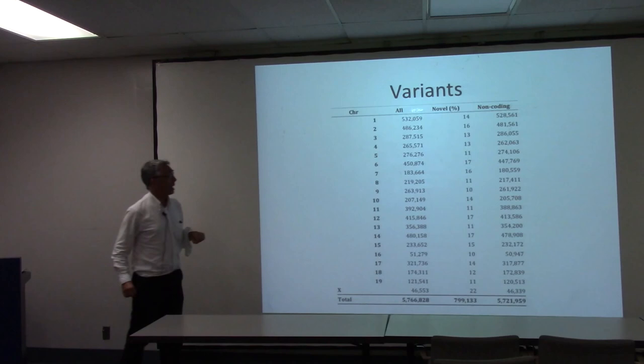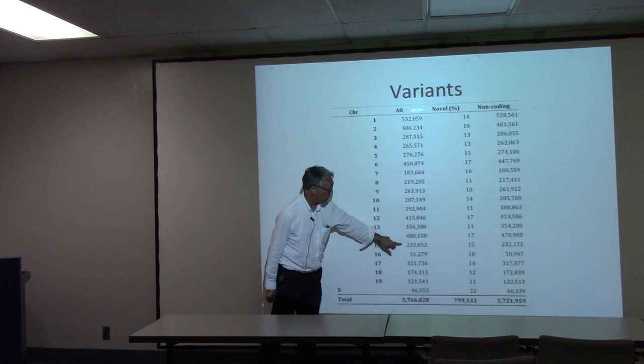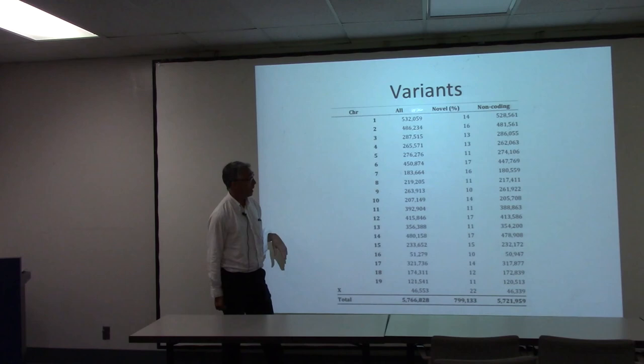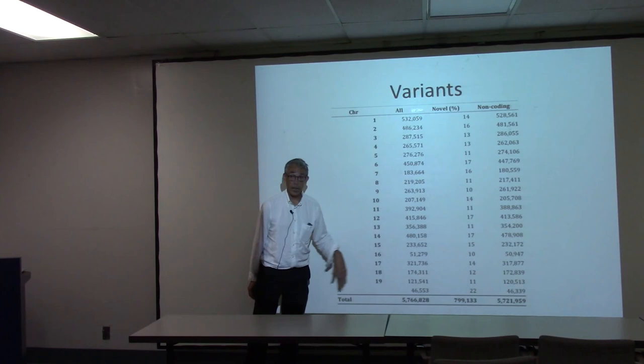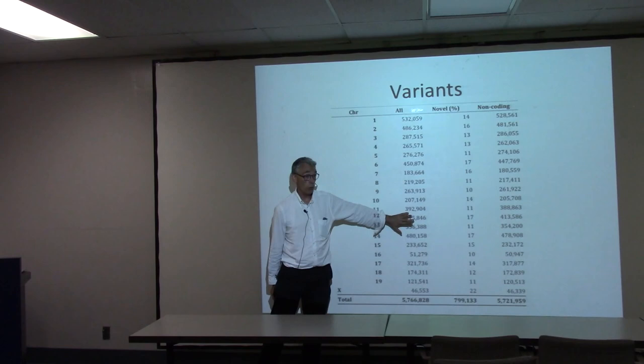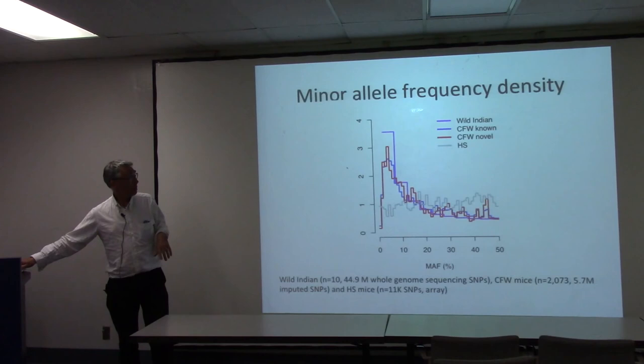Looking at total number of variants: chromosome 16 had only 51,000 variants, compared to most chromosomes of equal size which have 5–10 times as many. The total variants we found is about 5 million. The number used for genetic mapping was only a fraction of those, because many are in linkage disequilibrium. But this strategy, even at 0.15x coverage, captures almost all common variants.